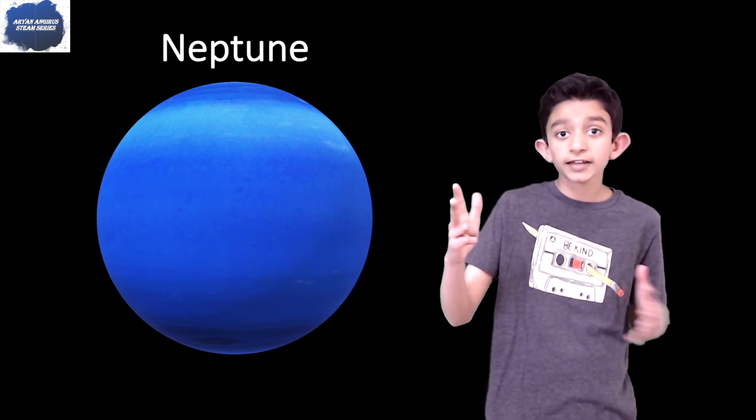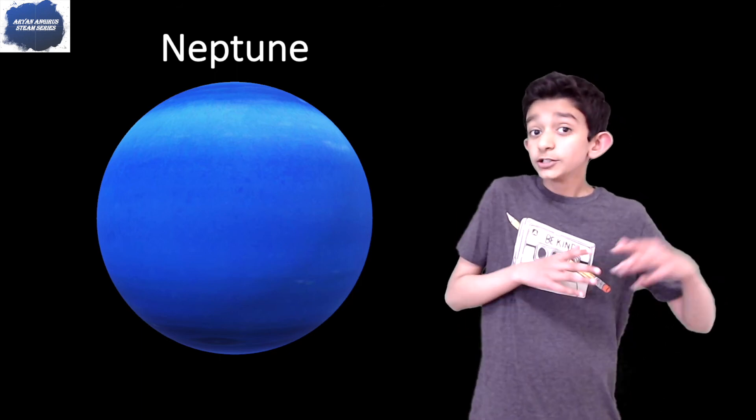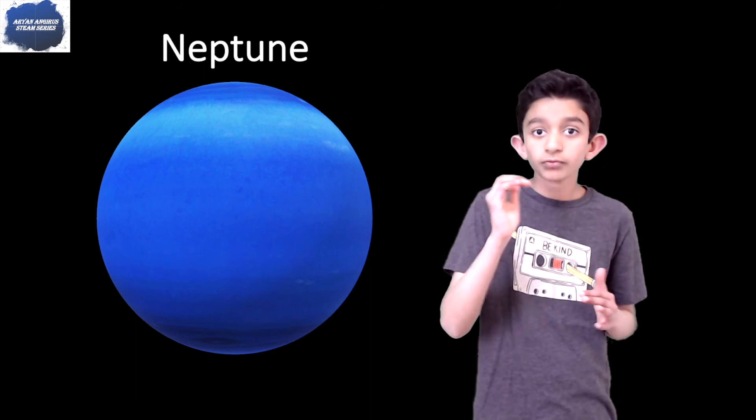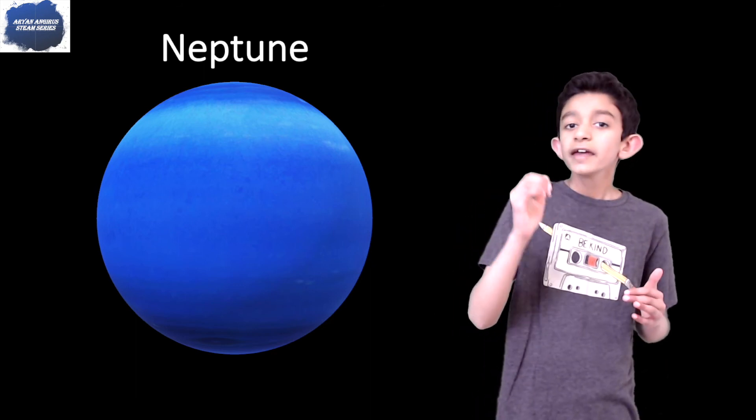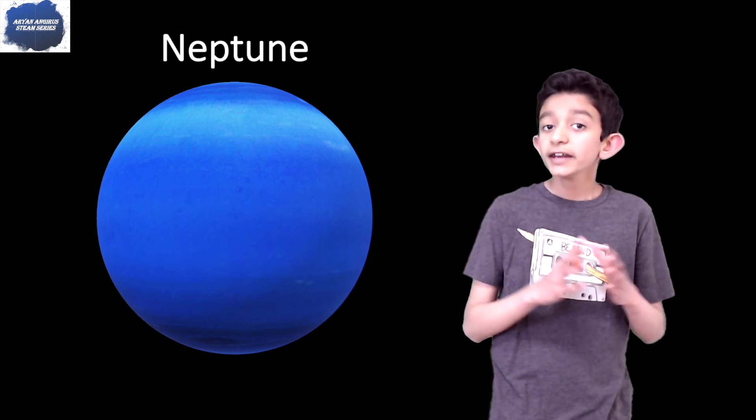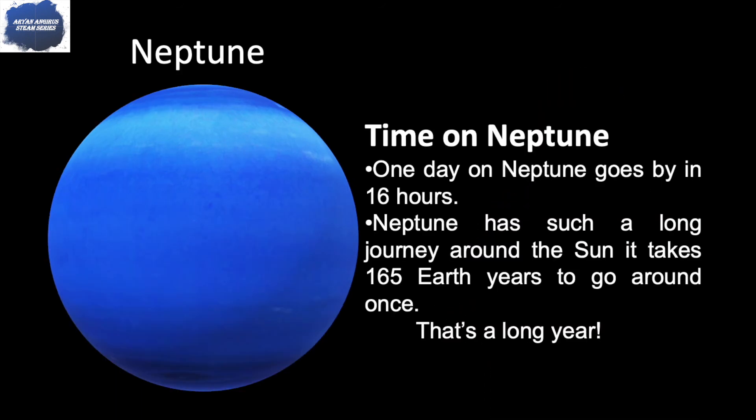And guess what guys, just like Saturn and Uranus, it also has rings—only six. It is extremely hard to see. And yes, Neptune is also an ice giant.